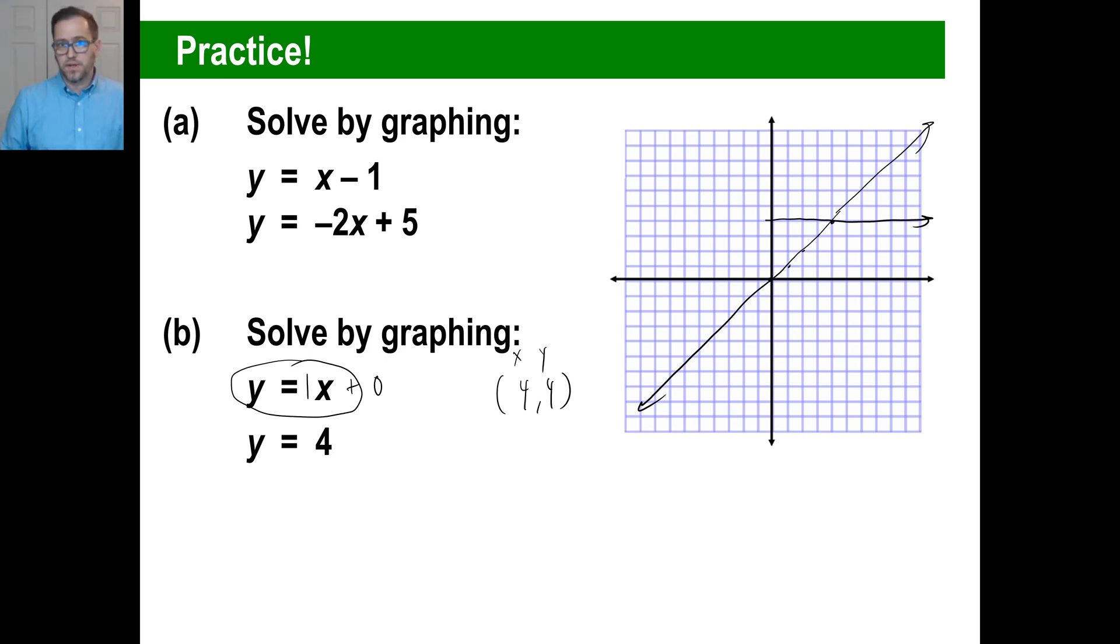Pause it and try c and see what you think the answer is for c. The answer to c is inconsistent. They do not intersect at all. Those are the three types of lines. Give those a whirl, and you'll have a couple of good questions to do in today's problem set. All right, see you all next time.